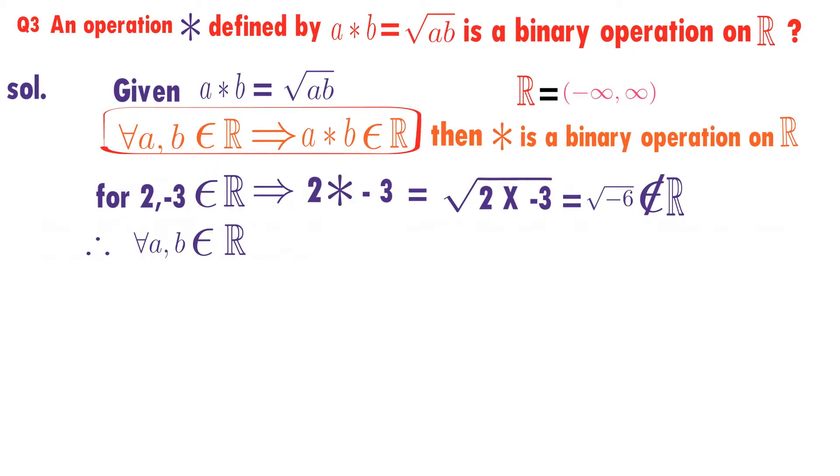for every a, b belongs to R implies a star b does not belong to R. Therefore,